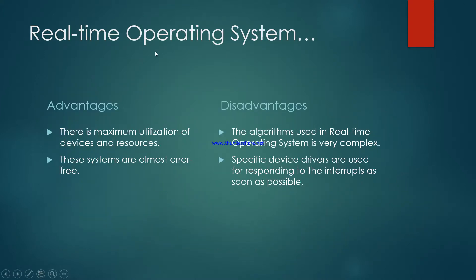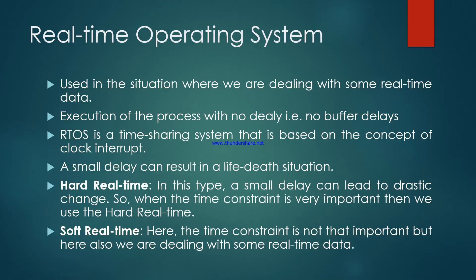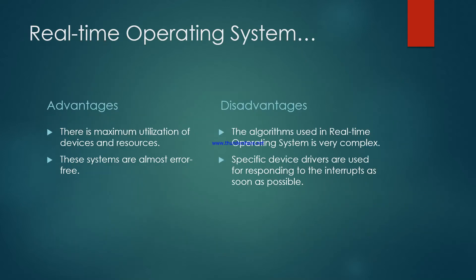The advantages of the real-time operating system are maximum utilization of devices and resources, and these systems are almost error-free. The disadvantages are that the algorithms used in real-time operating systems are very complex, and specific device drivers are used for responding to interrupts as soon as possible. These are the main advantages and disadvantages of real-time systems.